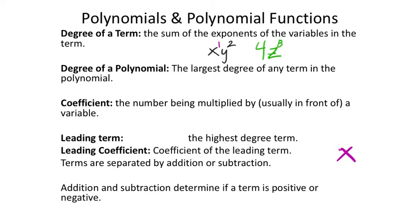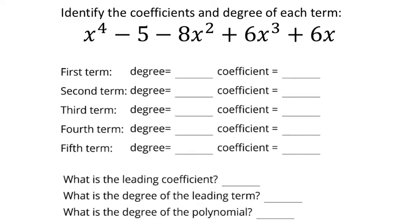For addition and subtraction, determine if a term is positive or negative. For example, in x·y² − 4z⁸, the minus sign makes the 4z⁸ term negative. Terms are numbered first, second, third, and so on, generally left to right. In math they may ask you to put it in descending order — from greatest to least — though the polynomial shown here is not in descending order.